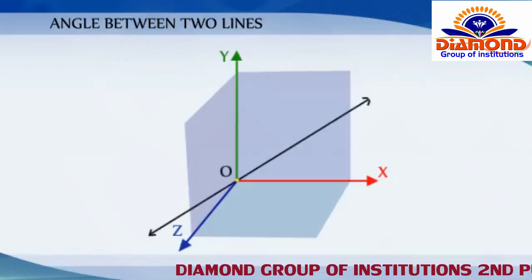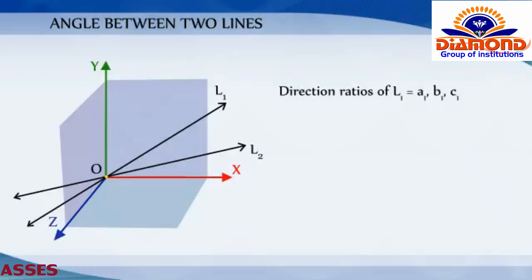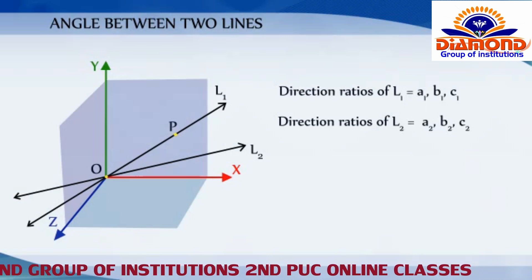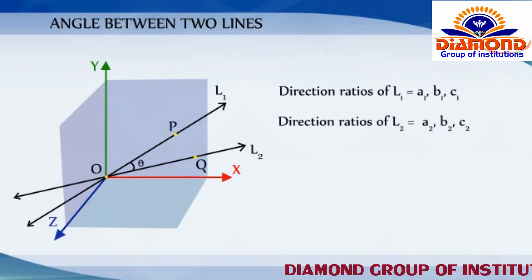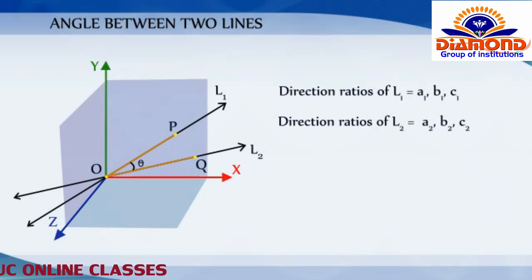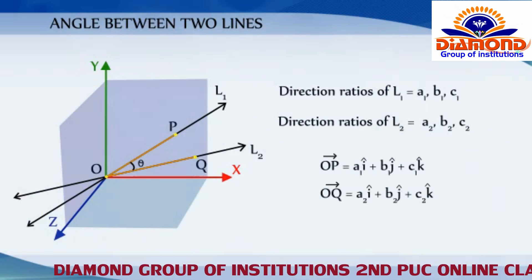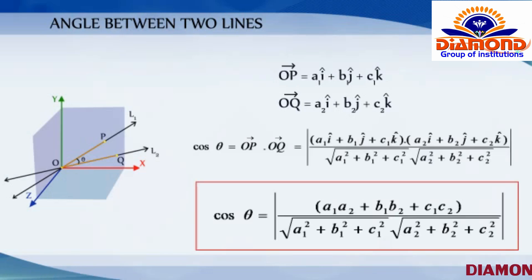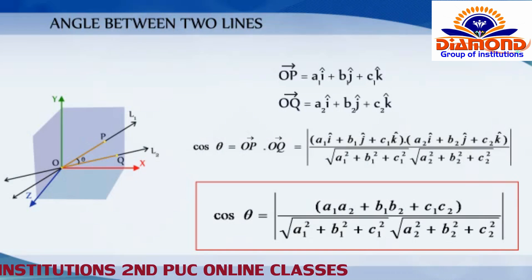Let L1 and L2 be two lines passing through the origin with direction ratios A1, B1, C1 and A2, B2, C2 respectively. Let P be any point on L1 and Q be any point on L2. Let theta be the angle between the two directed lines OP and OQ. These directed line segments are vectors with components A1, B1, C1 and A2, B2, C2 respectively. Therefore, the angle between vectors OP and OQ is: cos theta equals the modulus of (A1·A2 plus B1·B2 plus C1·C2) divided by the product of their magnitudes.